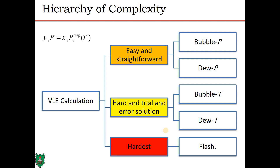The easy and straightforward calculations are bubble P and dew P, because in these cases we are given the temperature, allowing us to calculate the vapor pressure directly without any iteration. The harder, trial-and-error calculations arise when we must solve for temperature. The hardest type is the flash calculation, which requires trial and error using distribution coefficients and vapor fractions.